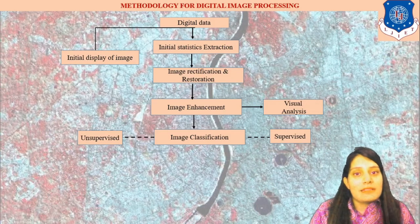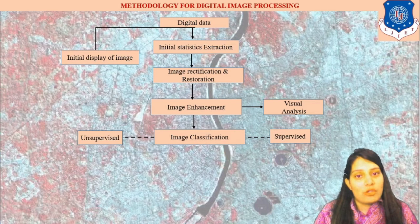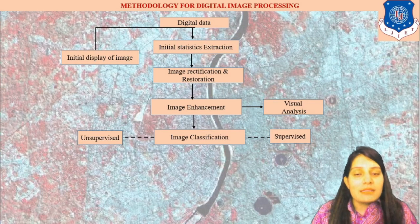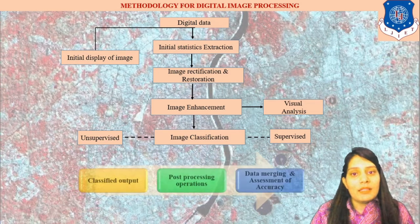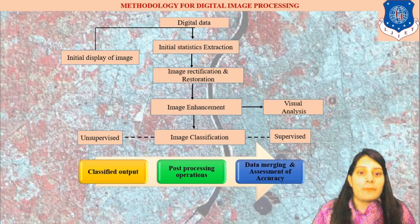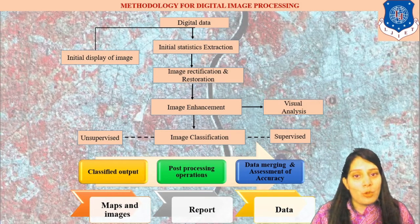The methodology for digital image processing begins with initial statistical abstraction, then image rectification and restoration, then image classification which consists of supervised and unsupervised techniques, and image enhancement. After enhancement we classify the image. Data is then classified as the classified output, followed by post-processing operations and an accuracy report. The final output will be data maps, reports, and data formations required for analysis in our GIS background.